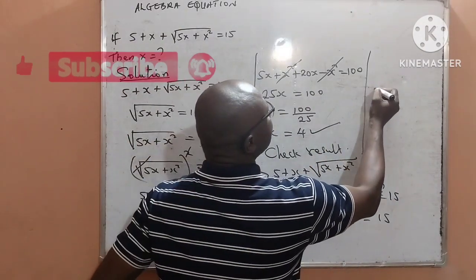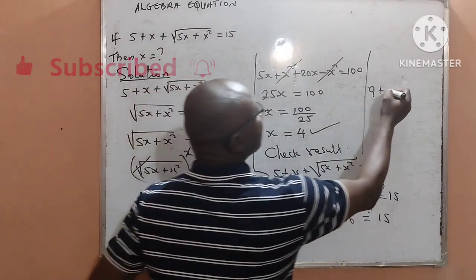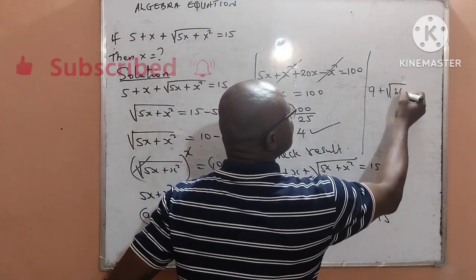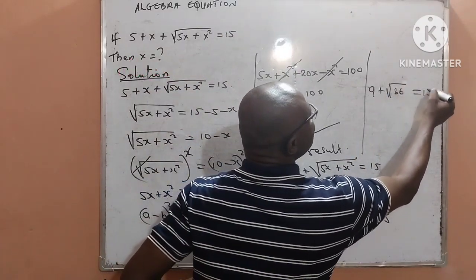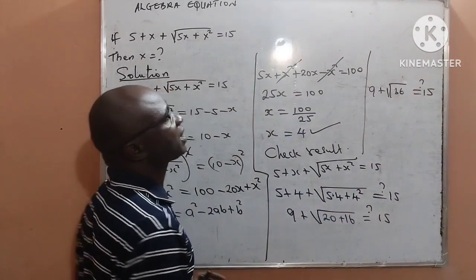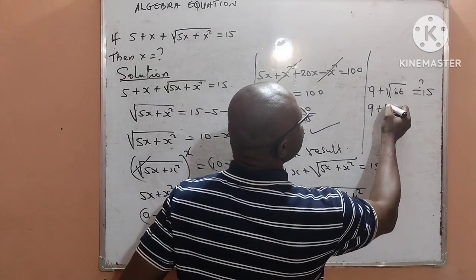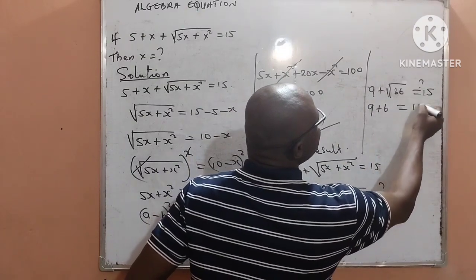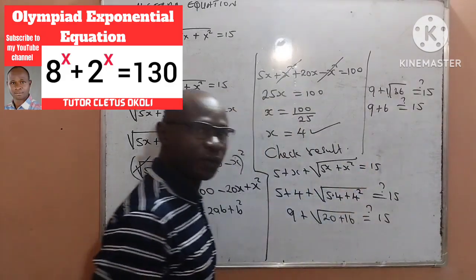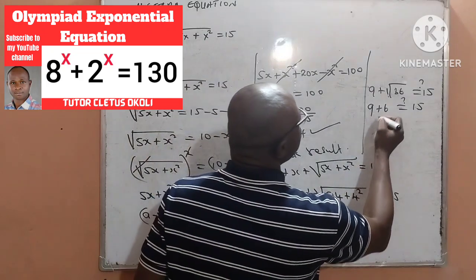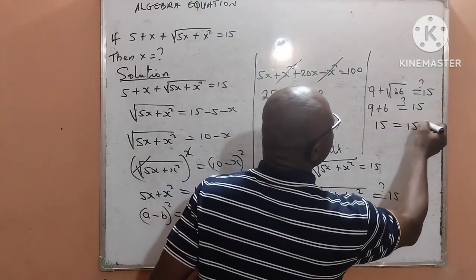This is now going to be 9 plus 20 plus 16 will give us 36. 9 plus square root of 36 is 6. Can this actually be equal to 15? Yes, 9 plus 6 is 15 equal to 15.